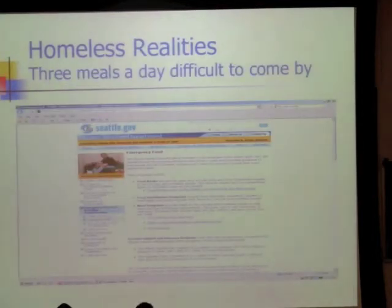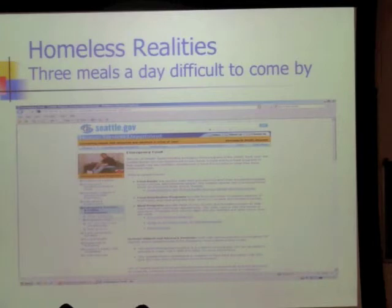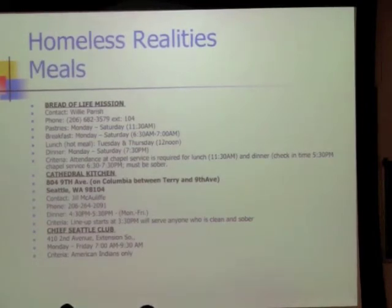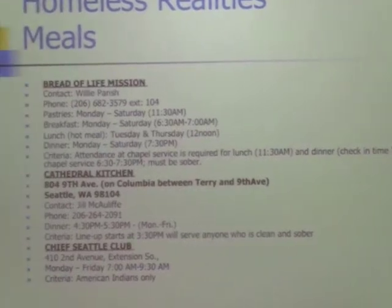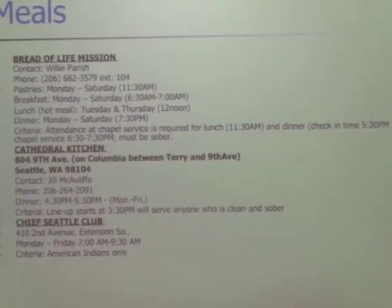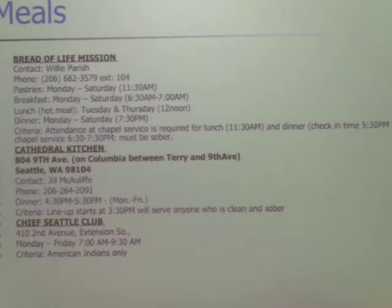Three meals a day are hard to come by. Seattle.gov has a hot meals resources directory, and there's a huge list — you'd think it's easy to get a meal. But many meals have restrictions: Bread of Life Mission requires chapel attendance; Cathedral Kitchen requires lining up at 3:30 PM and being clean and sober; Chief Seattle Club serves breakfast Monday through Friday for American Indians only. The majority of meals are Monday through Friday, and on weekends there are far fewer options.